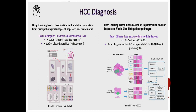I would like to show some applications for liver pathologists. For HCC diagnosis, I've selected two important papers. The first task was to distinguish hepatocellular carcinoma from adjacent normal liver — not so difficult, but the AI process was very performant: less than 10% of tiles were misclassified on the development set, and less than 20% in the validation test. The more complex task was to differentiate different kinds of hepatocellular nodular lesions from benign to malignant, obtaining very good performance with AUC values higher than 0.9.